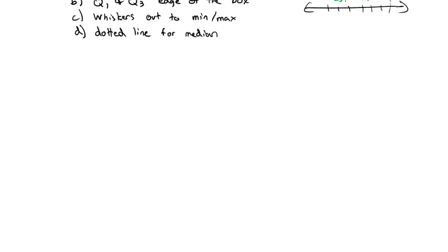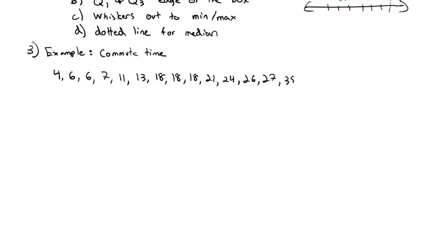Let's see if we can make a box plot. Going back to our example with the commute time. That list of numbers again for us was 4, 6, 6, 7, 11, 13, 18, 18, 18, 21, 24, 24, 26, 27, 35, 36, 36, 42, 43, 45, and 49.